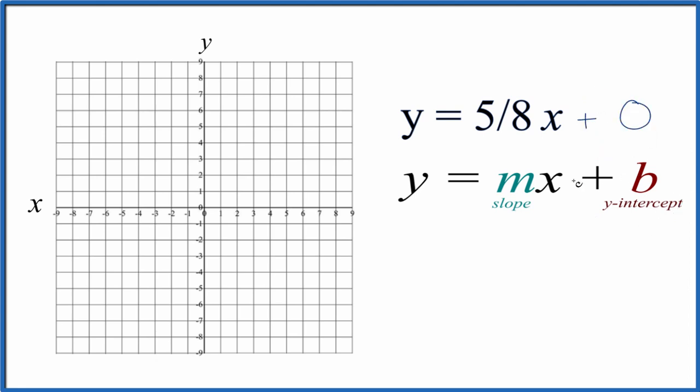Now we have a y-intercept and we can just go to the y-axis here and find zero. That's where the line for y equals 5/8x is going to cross the y-axis here at our y-intercept.